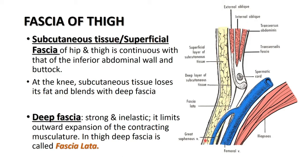Superficial fascia, also called subcutaneous tissue, lies deep to the skin and is adherent to the dermis with the help of fibers. It can contain a variable amount of fat. In the thigh, the superficial fascia is continuous with the fascia of the inferior lateral abdominal wall, while below at the knee it blends with the deep fascia of the leg.